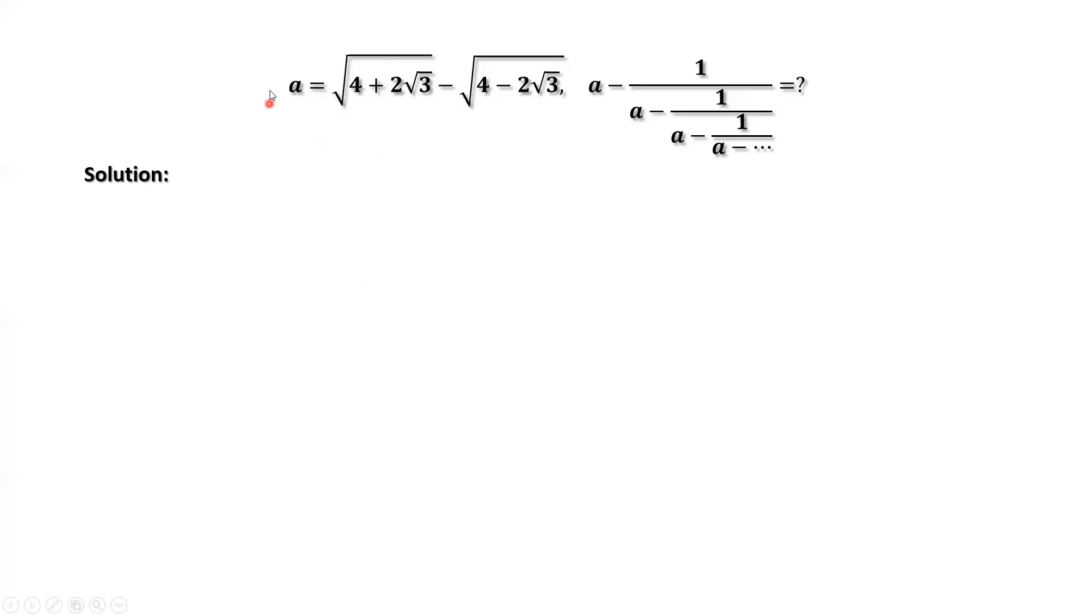From this given equation, we square both sides. Why are we doing this? Because the inside parts of two square roots are conjugated to each other. Therefore, the cross term is a number without square root.